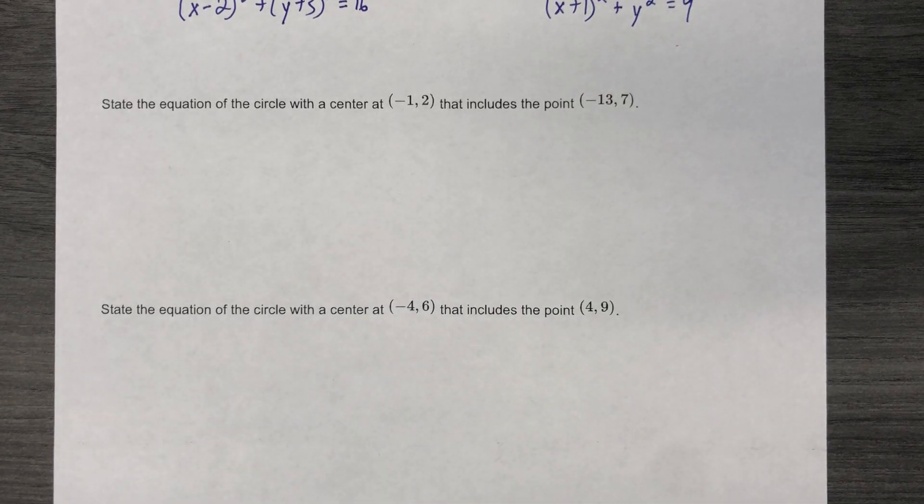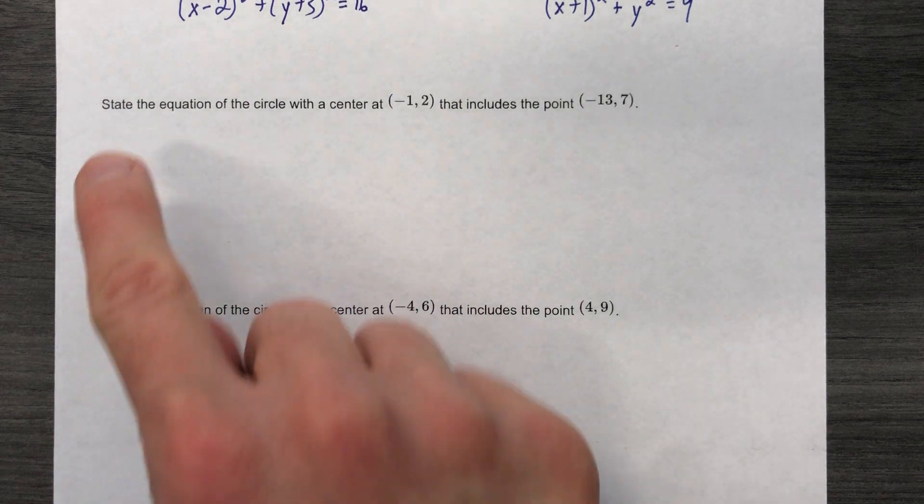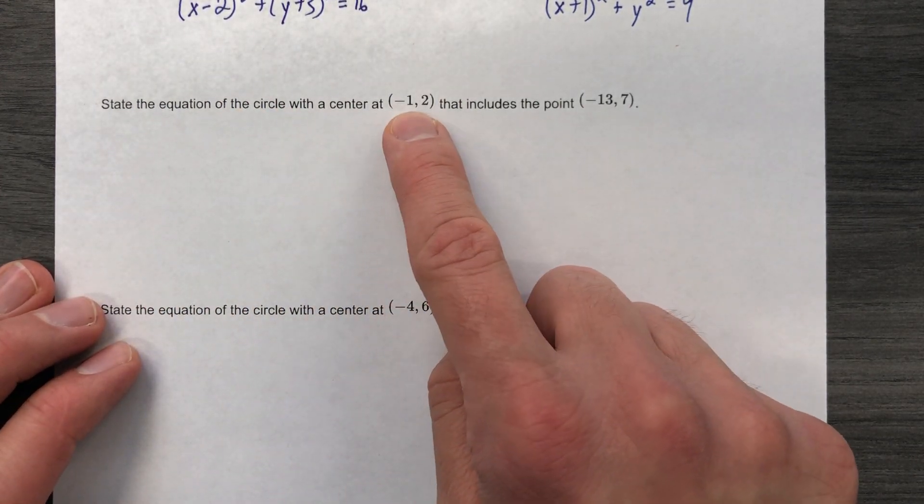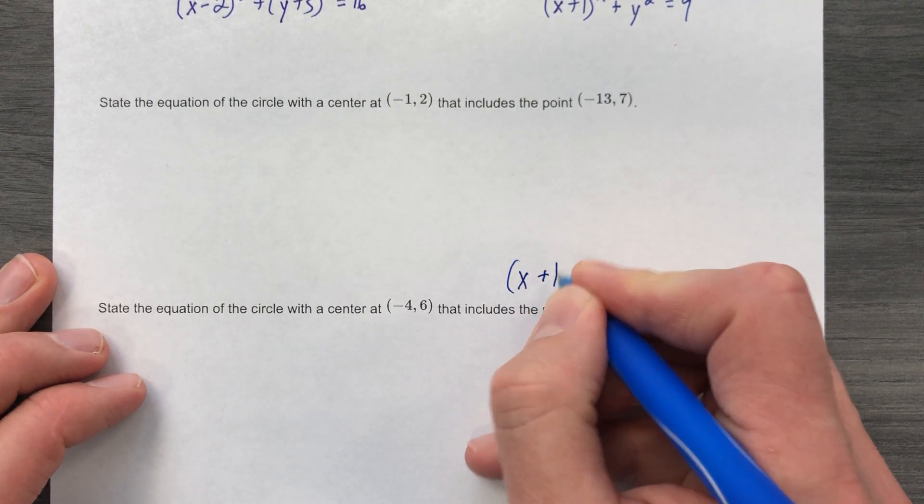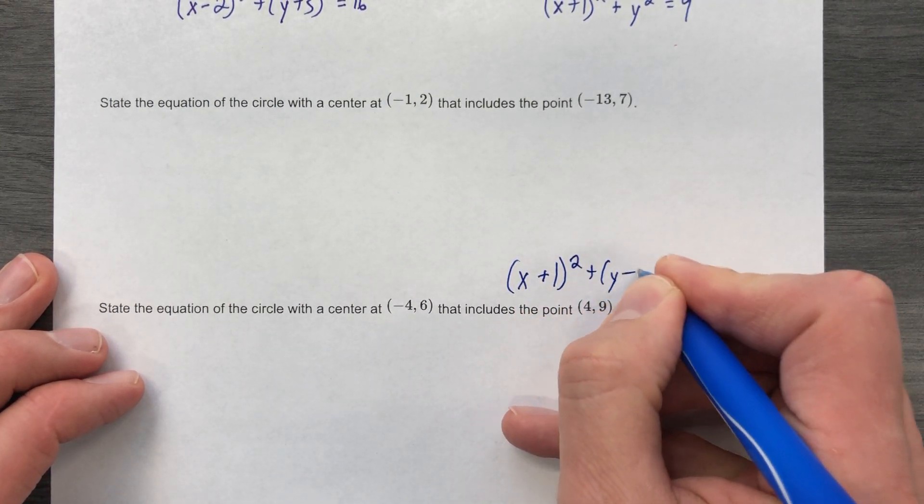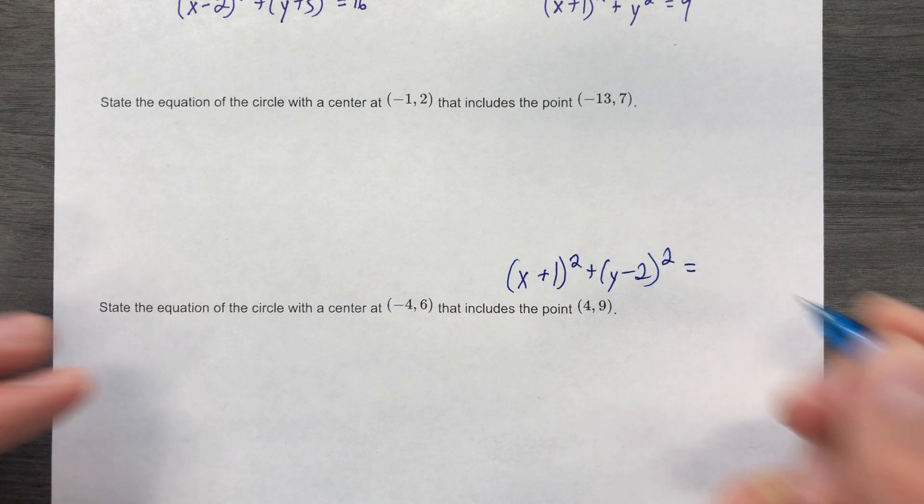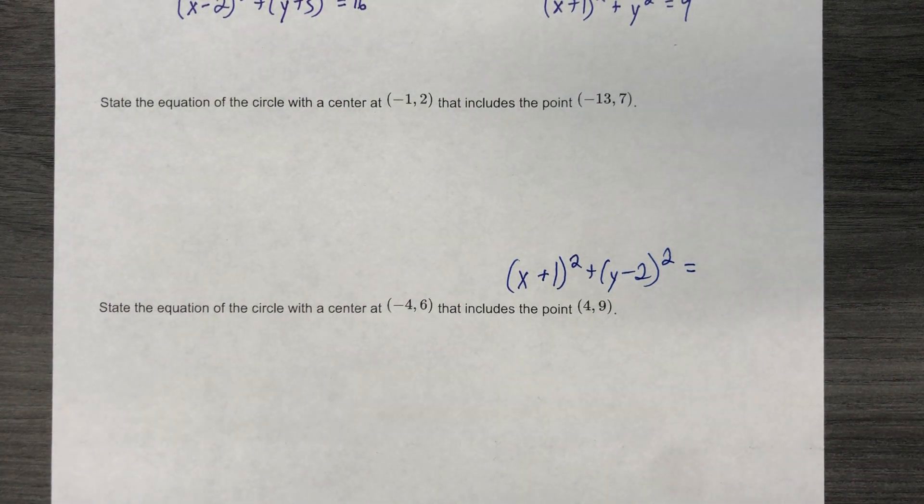Now they're not going to give us the information we're used to seeing. So let's just read what we have and go from there. State the equation of the circle that has this center. Oh, okay, fair enough. Here's my final answer. I mean, for real. Equals, oh man, I don't know my radius. Okay, so here's the thing.